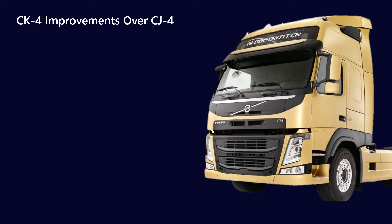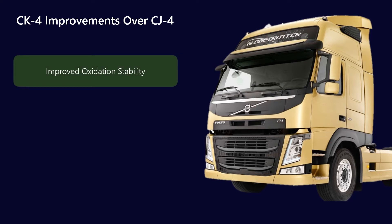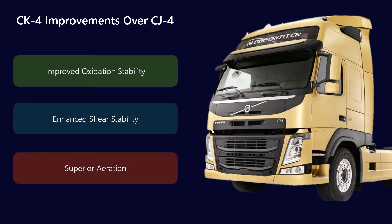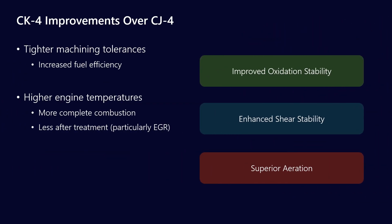Now let's get into the CK4 improvements over CJ4. The CK4 spec was specifically designed to improve the oxidation stability of the lubricant, enhance the shear stability of the lubricant, and to provide superior aeration performance. Tighter machining tolerances are going to increase the amount of shear that the lubricant is subjected to. For example, the clearance between the piston rings and the cylinder wall is a very small area, and as that tolerance gets tighter, the shear force applied to the lubricant film gets higher and higher.